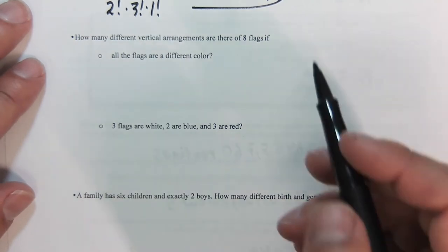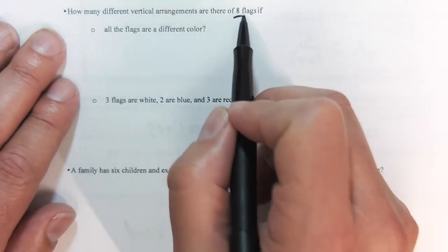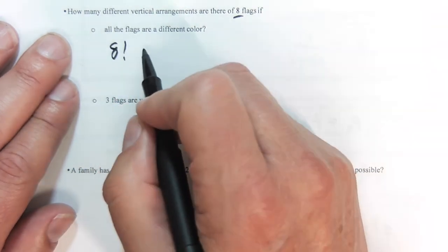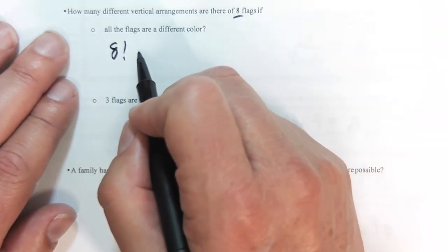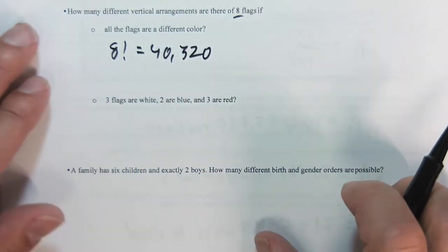So arrangements of flags. Here, there's 8 flags, and they're all different color in this first one. That means it's going to be 8 factorial, which is 40,320. You can certainly verify that with your calculator.